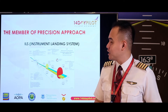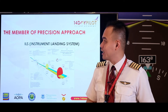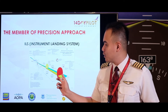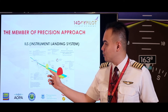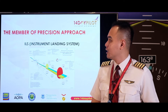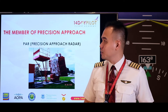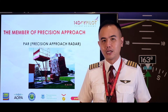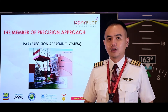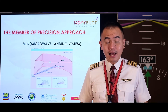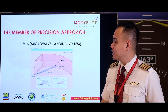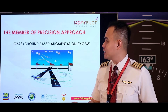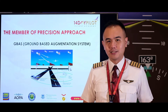The members of precision approach: number one is the Instrument Landing System, the ILS — you have a localizer, a glide slope, and markers. Number two is Precision Approach Radar, which uses radar to provide a precision approach. Number three is MLS, the Microwave Landing System, normally used by the military, and GBAS, the Ground-Based Augmentation System.